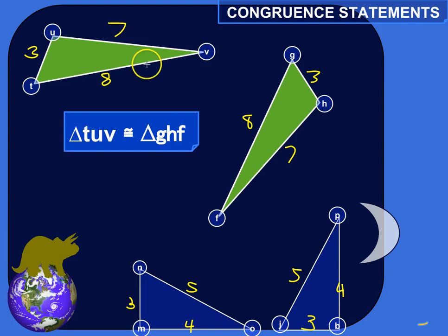And I'll try to explain what I mean here. So we've got triangle TuV is congruent to, and I might not be able to read that symbol very well, so I'm going to draw it here. An equal sign with a little squiggle on the top means congruent to triangle GHF.